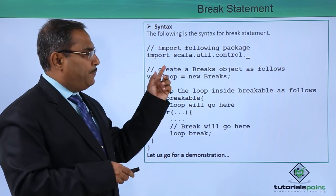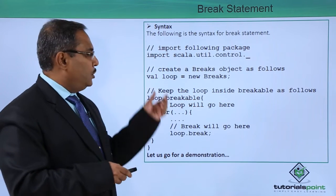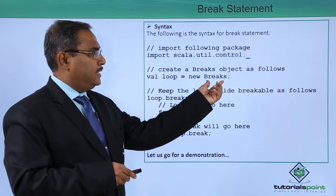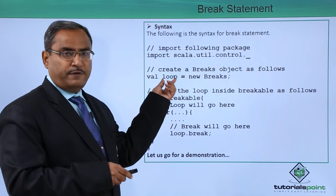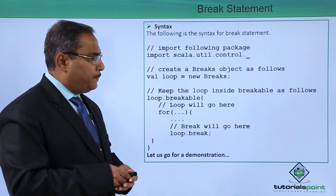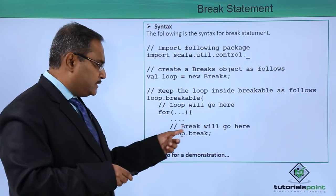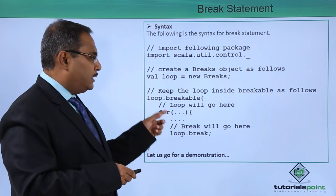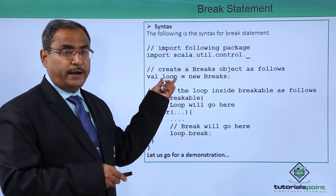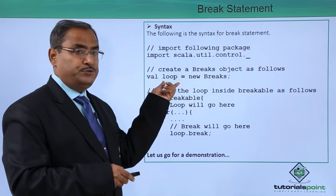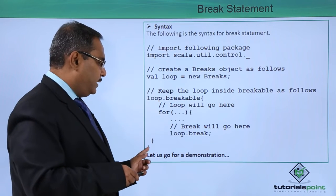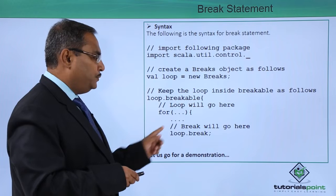Next, create a break object as follows: val loop = new Breaks. That is the new object defined under Breaks. Then, keep the loop inside breakable: there is a for loop which has been kept under breakable. You see loop.breakable — this loop was defined earlier as a Breaks object — and within the curly braces we have kept the for loop.